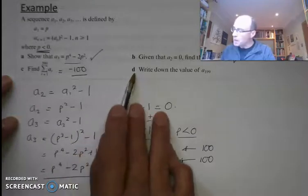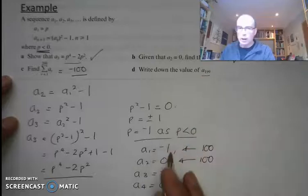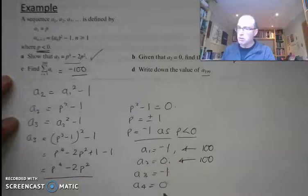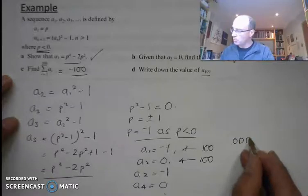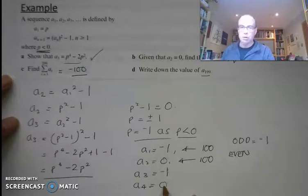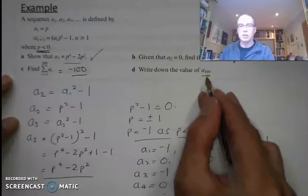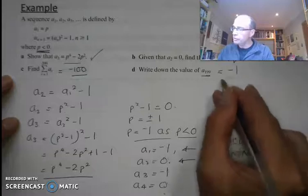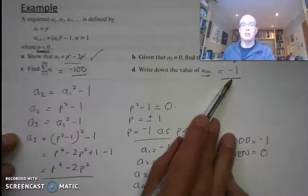Part D says: write down the value of a199. Go back to your sequence and see what's going on. The first, third, fifth, seventh values are all negative 1 — the odd terms are all negative 1. The even terms — 2, 4, 6, 8 — are all 0. 199 is odd, so it's going to have the value of negative 1. So the 199th term of the sequence has a value of negative 1.